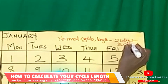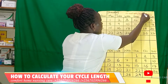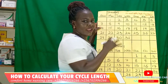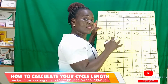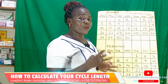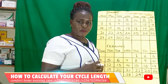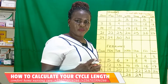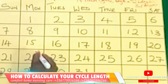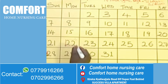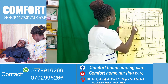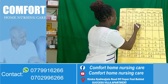Any cycle length that is above 35 days is also considered abnormal. According to our question, the lady said she saw her period blood on the 22nd. On our calendar, the 22nd is her first day of seeing her menstrual period blood.